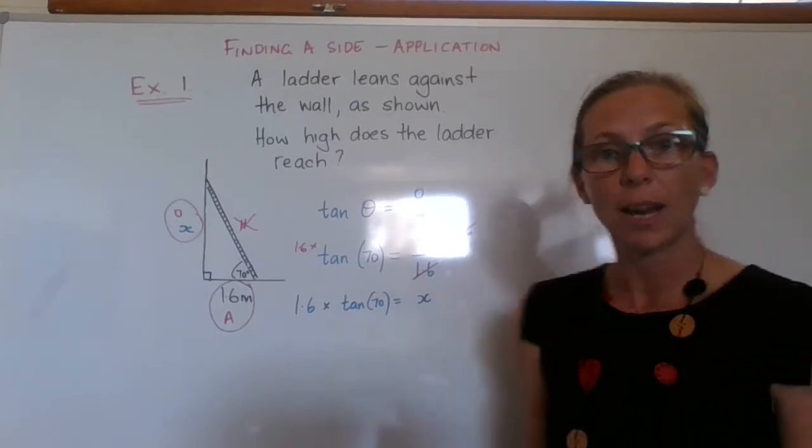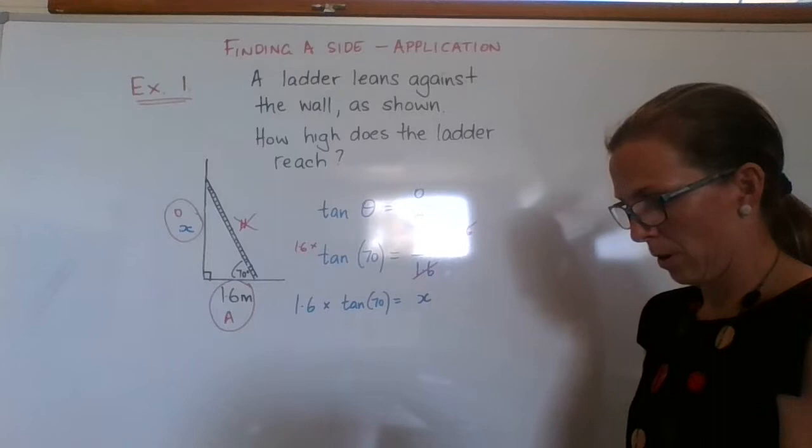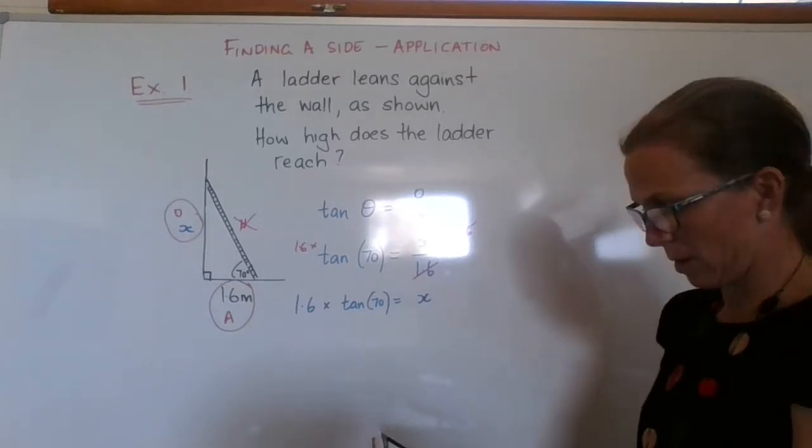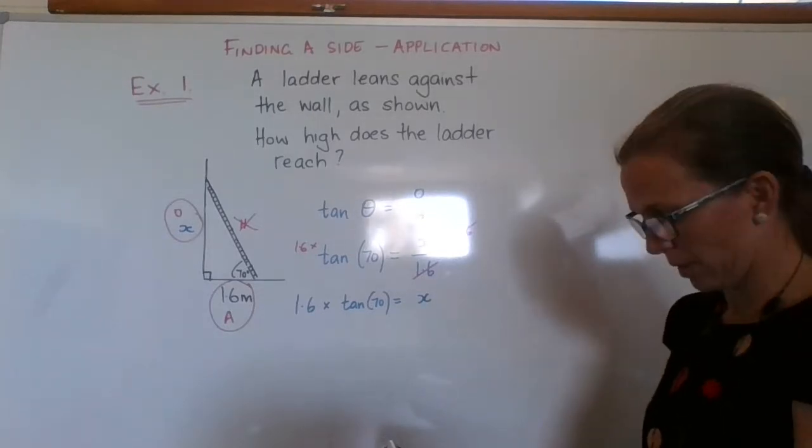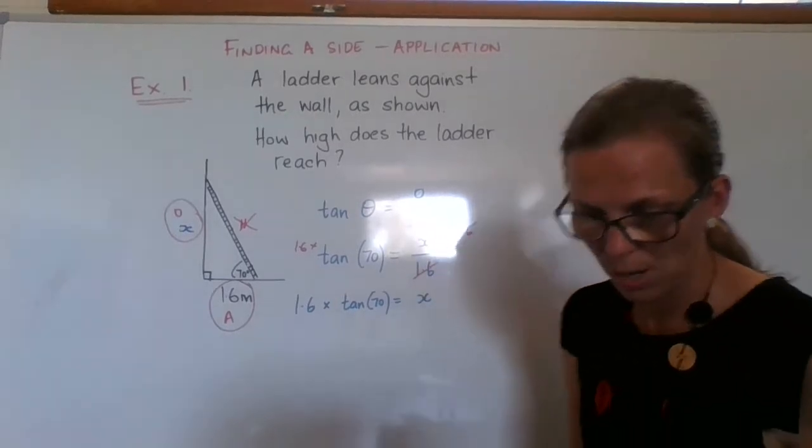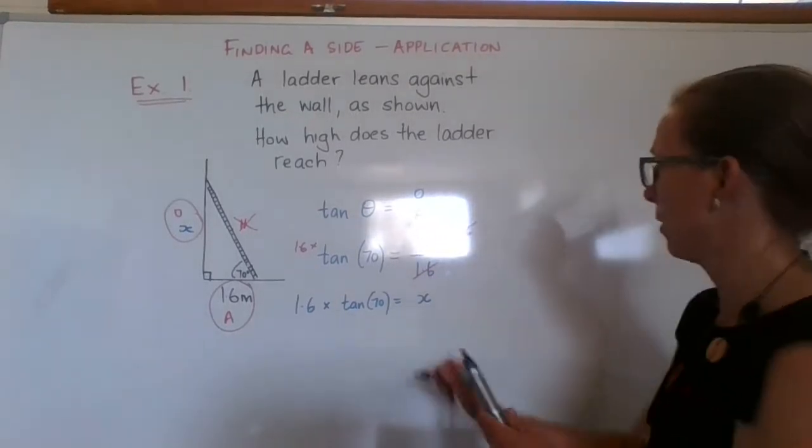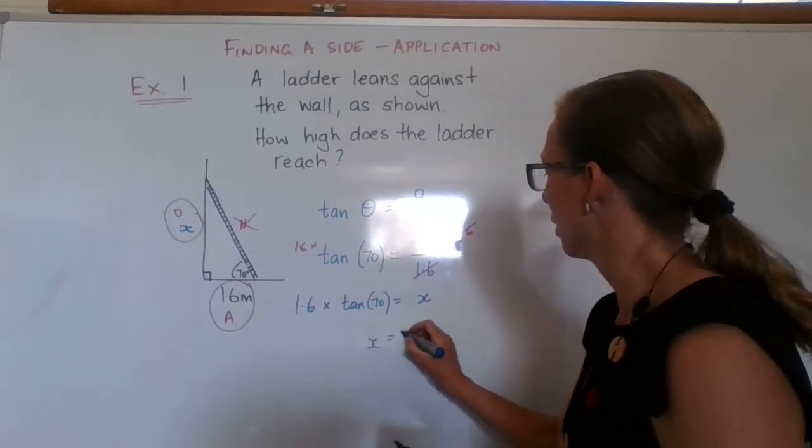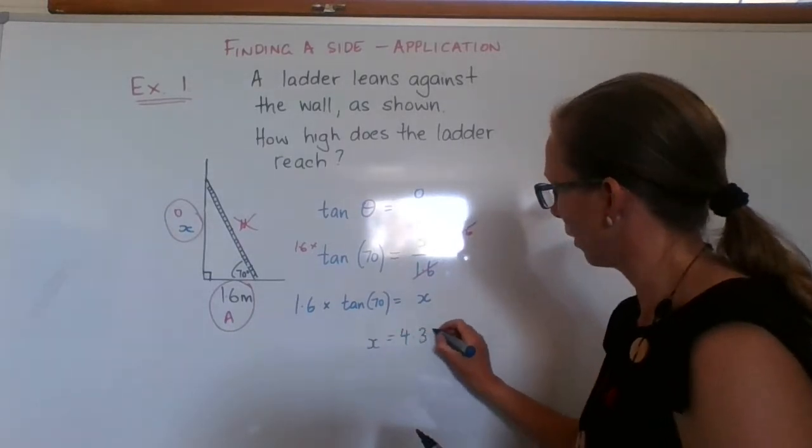Use my trusty calculator. 1.6 times tan 70, close bracket, equals 4.395. So 4.395.